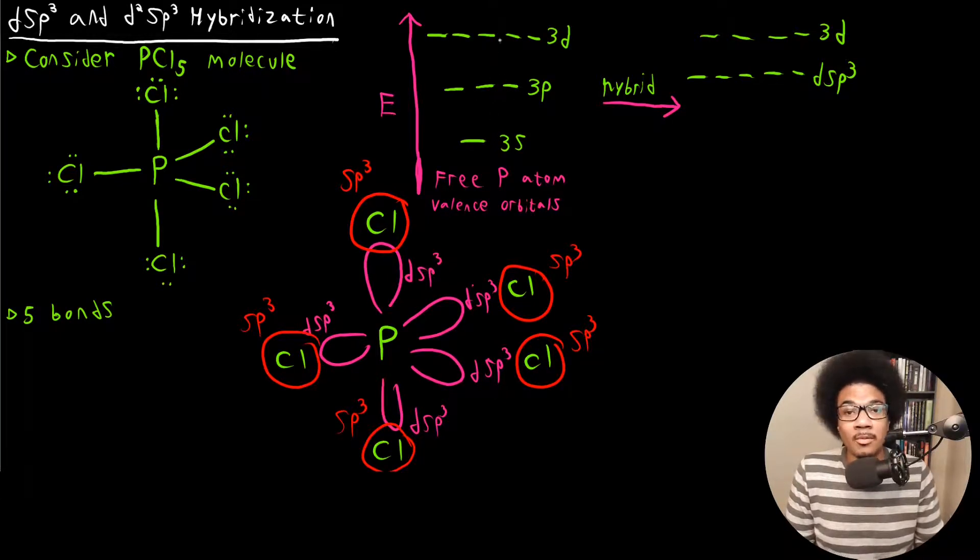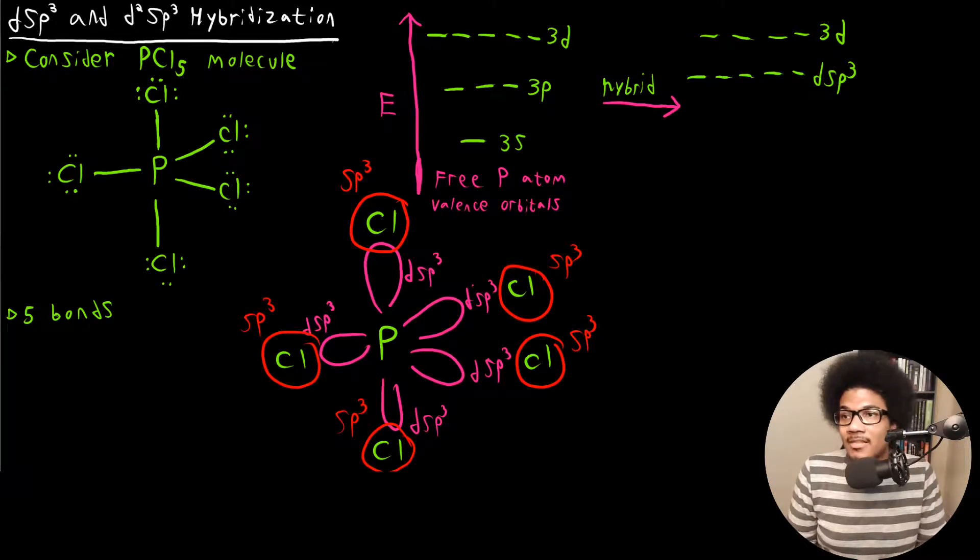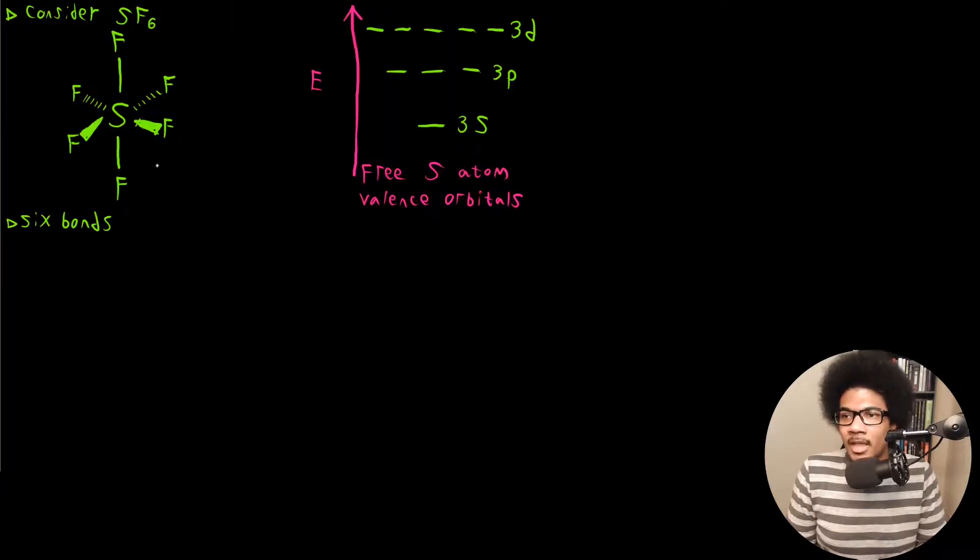This only happens once you get to period three and below where you have these D orbitals that are energetically close enough to get involved in the bonding. So that's DSP3 and the last one, the perfect example is again, SF6.